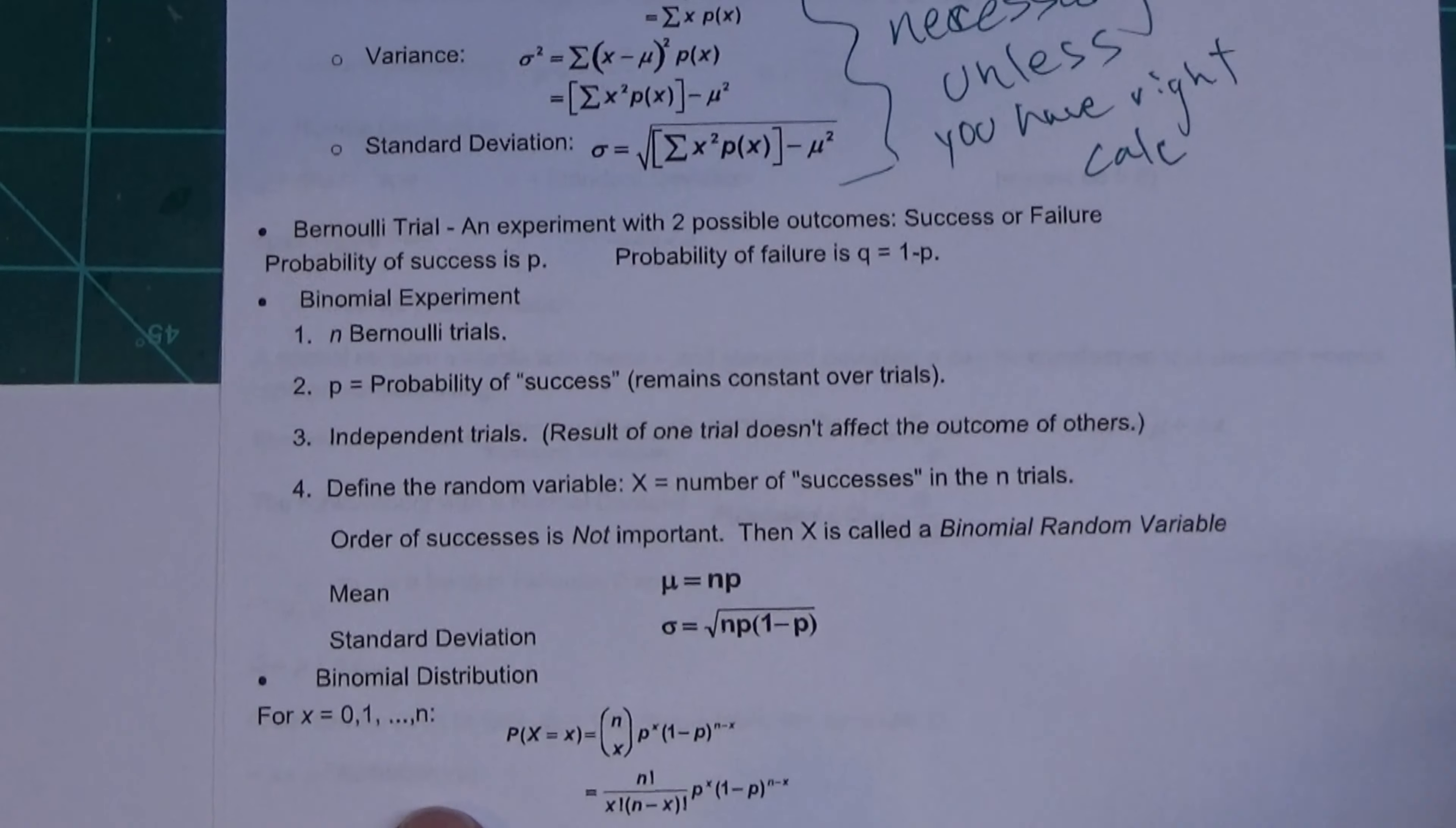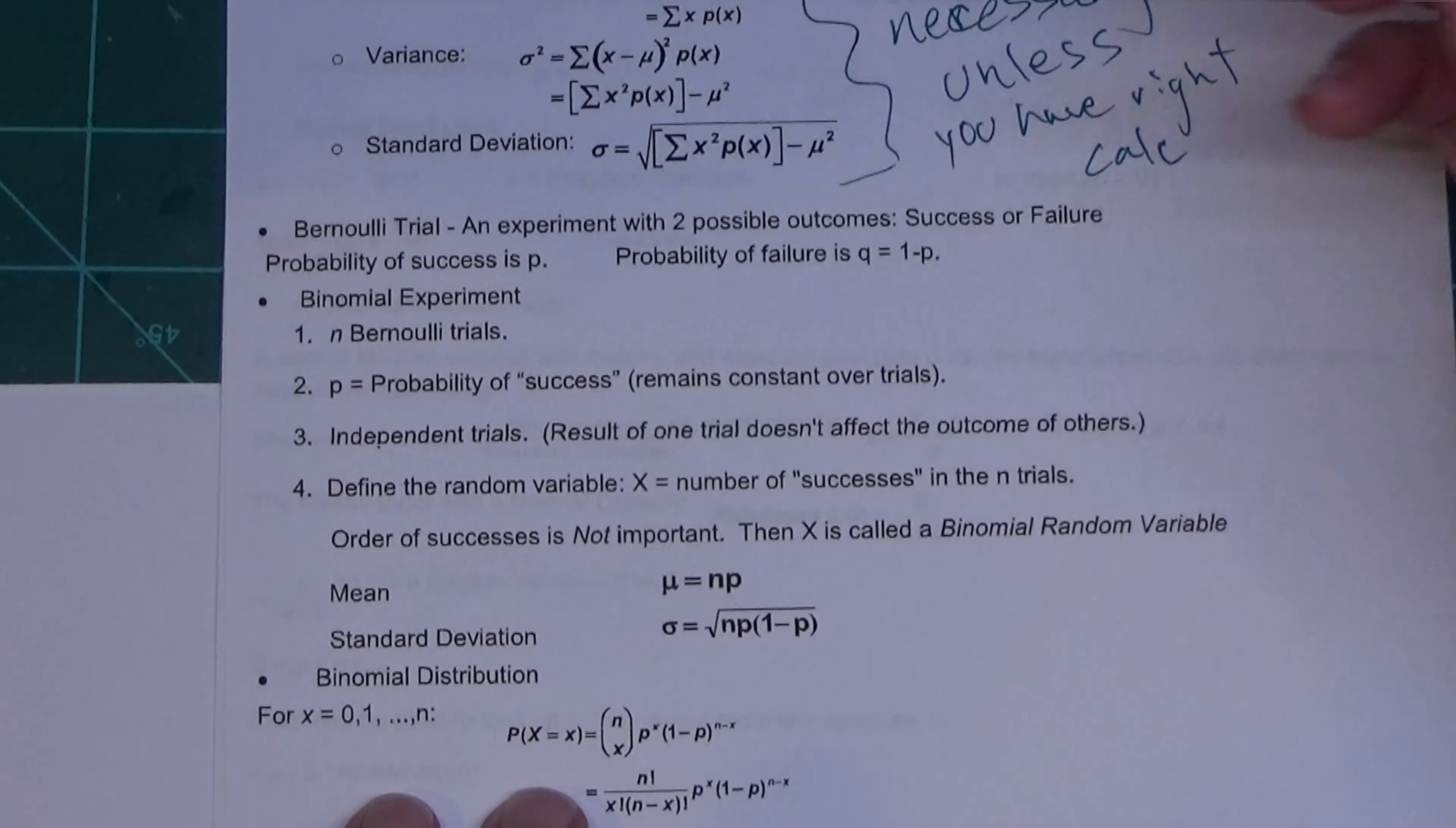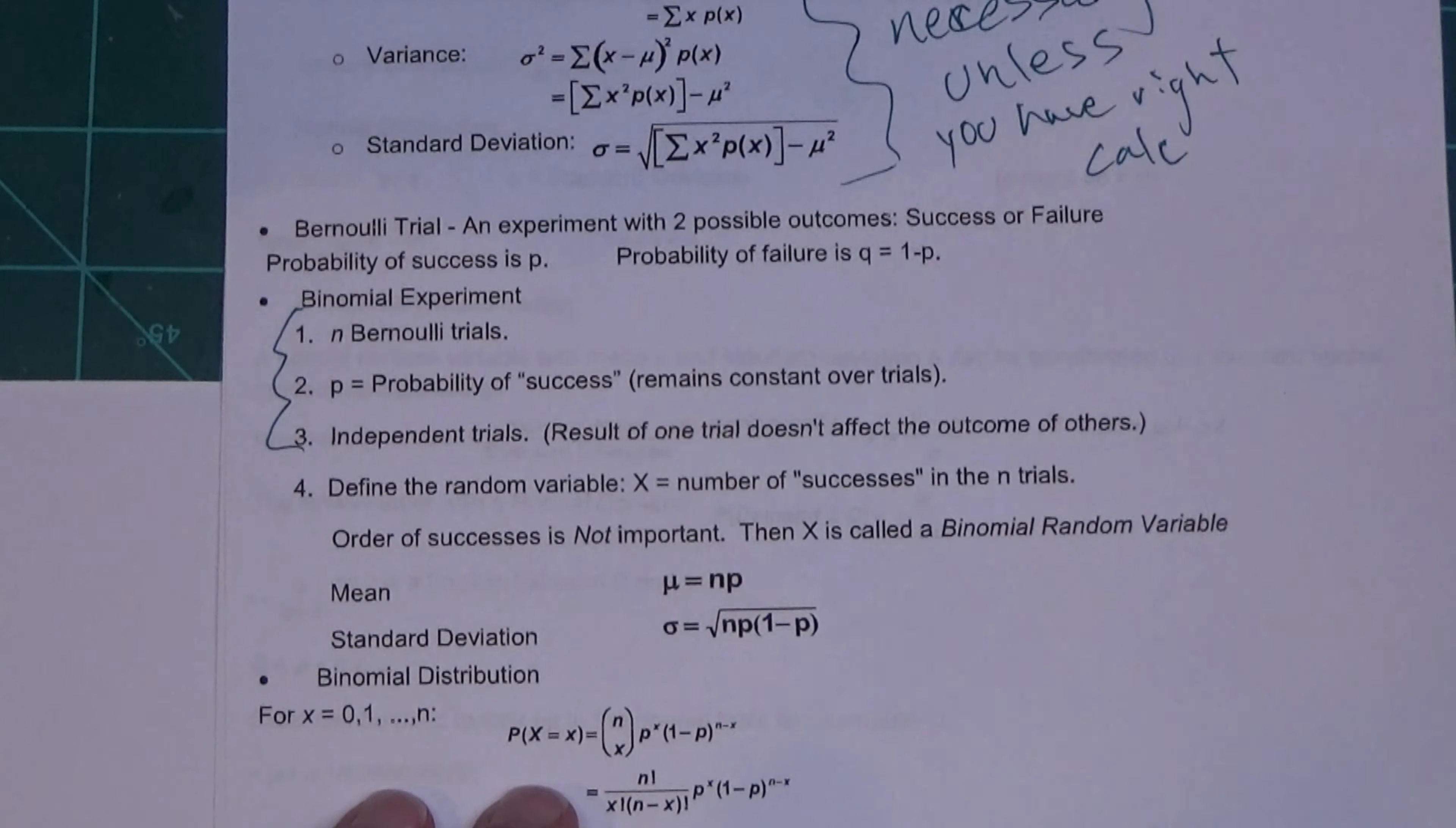This next section here is talking about a binomial—a Bernoulli trial. It's called Bernoulli because the Bernoulli family came up with this, but most of the rest of the world calls it a binomial trial or binomial experiment, and it's listed right there.